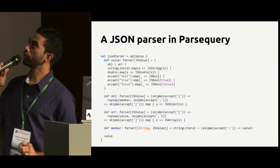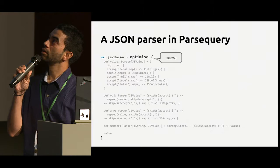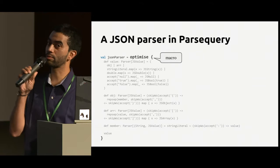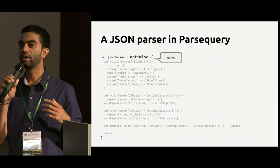This is how you use this library. This is a JSON parser. The key thing is you use this optimized block in which you stick your parser, and the optimized block is a macro — namely a black box macro — so it will take whatever is inside, transform it, and give you back an optimized version of the parser.